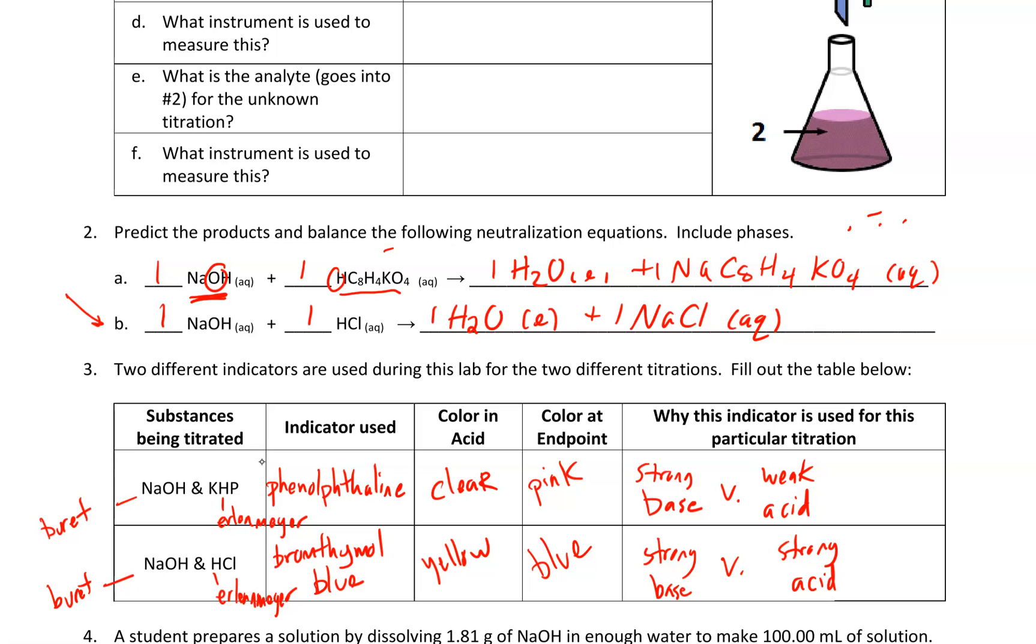And once it turns blue and it persists for about 30 seconds or so, you've reached the endpoint of the titration. You are done. But make sure that you are using the correct indicator with the combination of titrant and analyte. You don't want to flip-flop them. You're going to get weird endpoints.